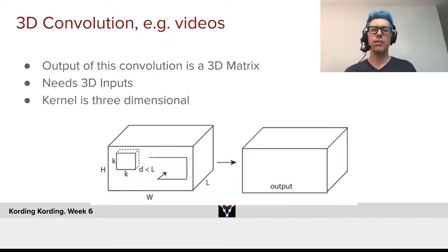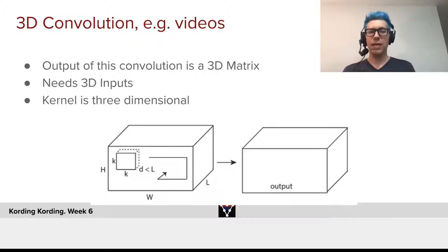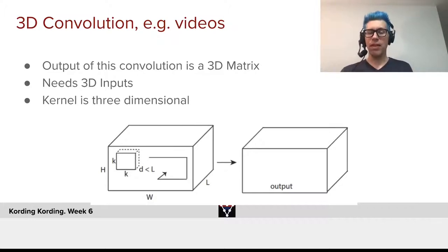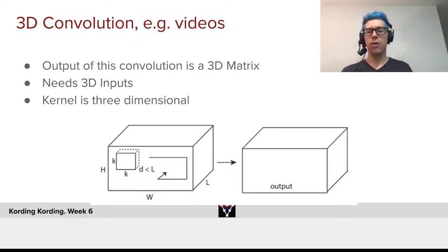Of course, there are cases — for example, videos — where we deal with three-dimensional data. In that case, we want, as output, a 3D matrix, for example about how things move in space. We will need 3D input. Keep in mind, a video is X by Y by time, and the kernel is then three-dimensional. The kernel goes through that entire 3D stack, and the output, therefore, will be three-dimensional.